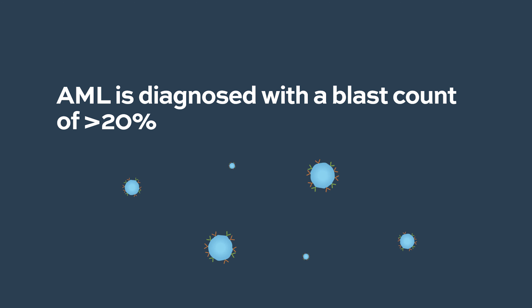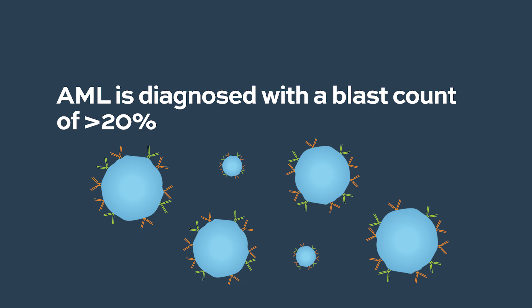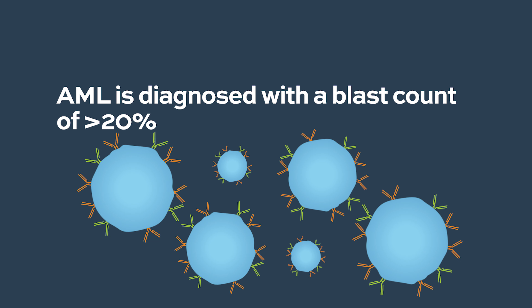The definitive test to diagnose acute myeloid leukemia is the bone marrow aspiration and biopsy. This allows us to count the number of blasts — these early blood cells in the bone marrow. By definition, if the blast count is 20% or more in either the bone marrow or the blood, we call this acute myeloid leukemia.